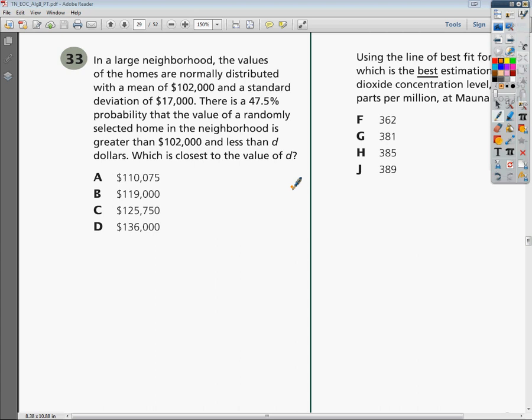In a large neighborhood, the values of the homes are normally distributed with a mean of $102,000 and a standard deviation of $17,000. There is a 47.5% probability that the value of a randomly selected home in the neighborhood is greater than $102,000 and less than D dollars. What is closest to the value of D?